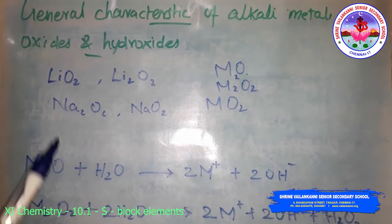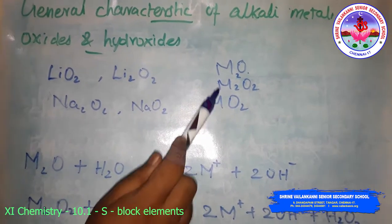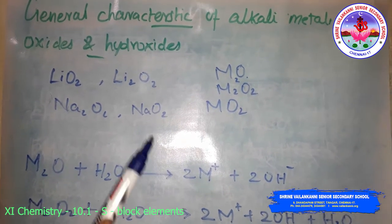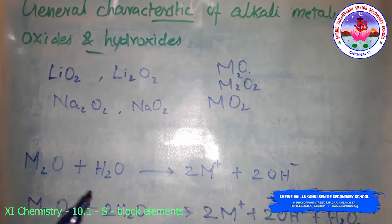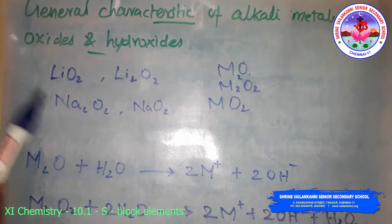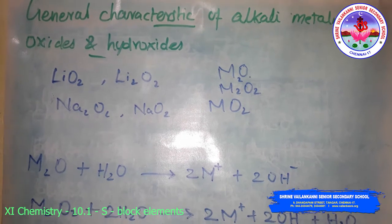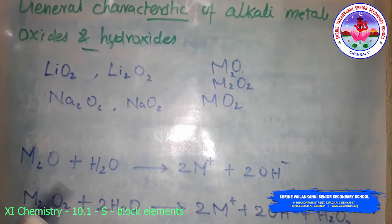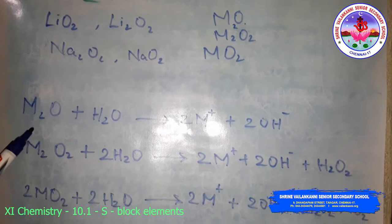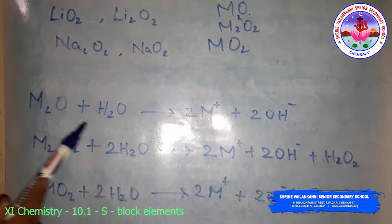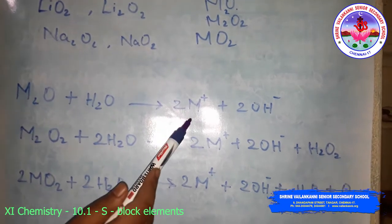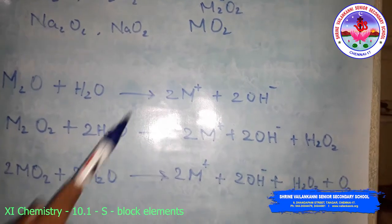The stability of the peroxide or superoxide increases as the size of the metal ion increases, due to the stabilization of large anions by large cations through the lattice energy effect. These oxides are easily hydrolyzed in water. The metal oxide reacts with water, undergoing hydrolysis to produce metal cations and hydroxide ions.